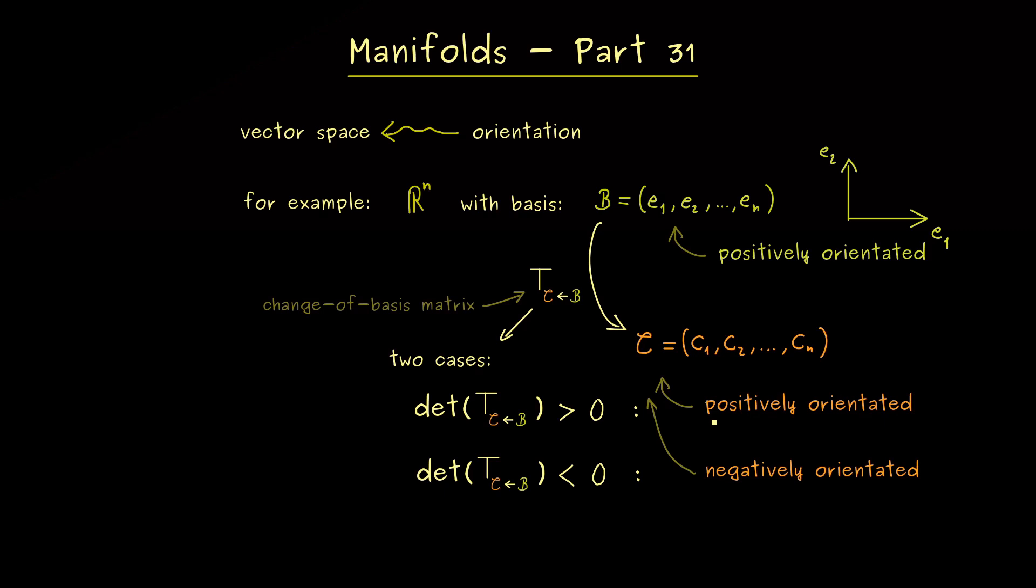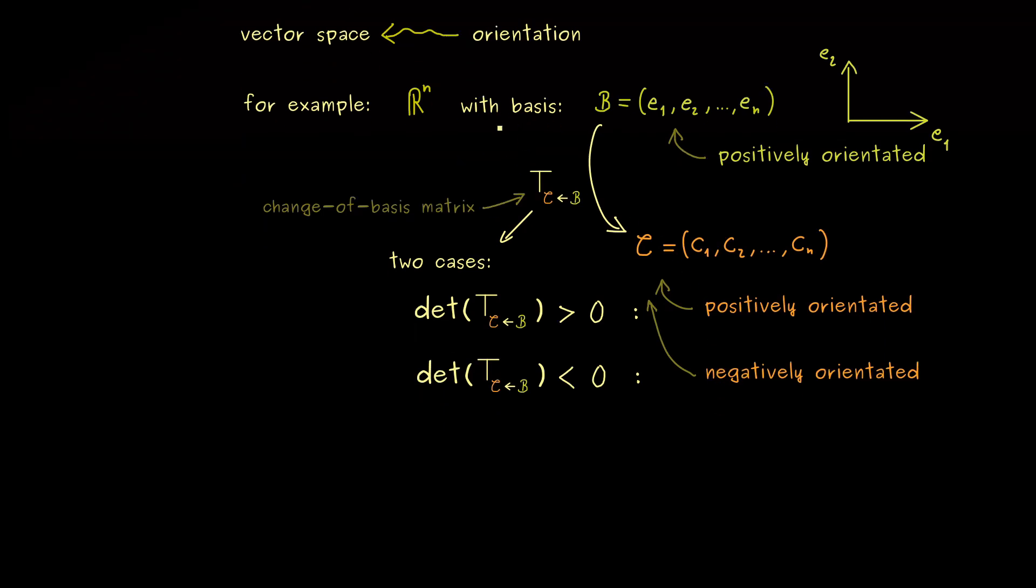These are just names. The important thing here is that you see that we have exactly two choices.